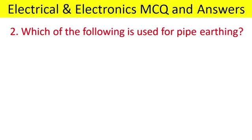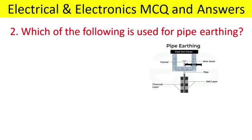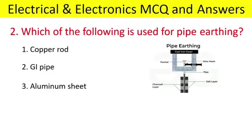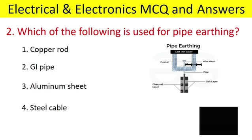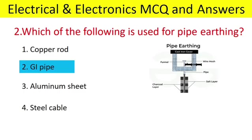Which of the following is used for pipe earthing? Copper rod, GI pipe, Aluminium sheet, Steel cable. Answer: GI pipe.